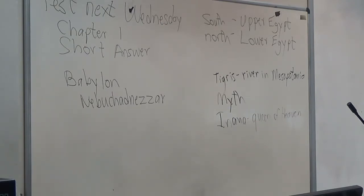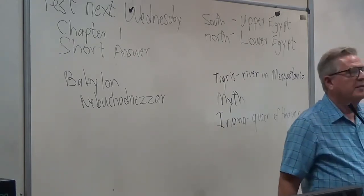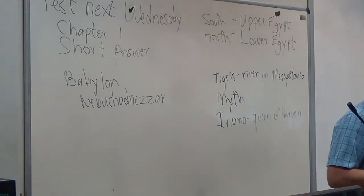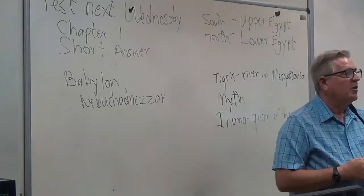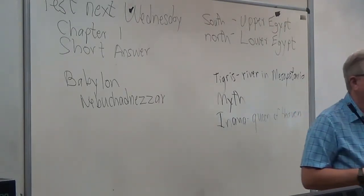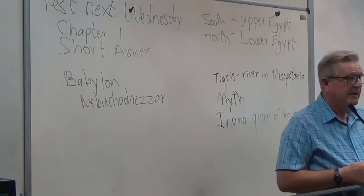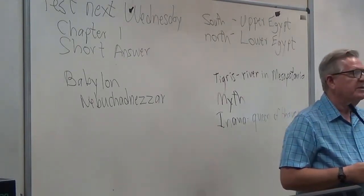The history of climatology is a history of warming and cooling. You've all been conditioned to believe that the Earth is warming and it's all man's fault. But there are scientists who observe that Mars is warming up, Neptune is warming up, and Jupiter is warming. How do man-made carbon emissions warm up other planets?